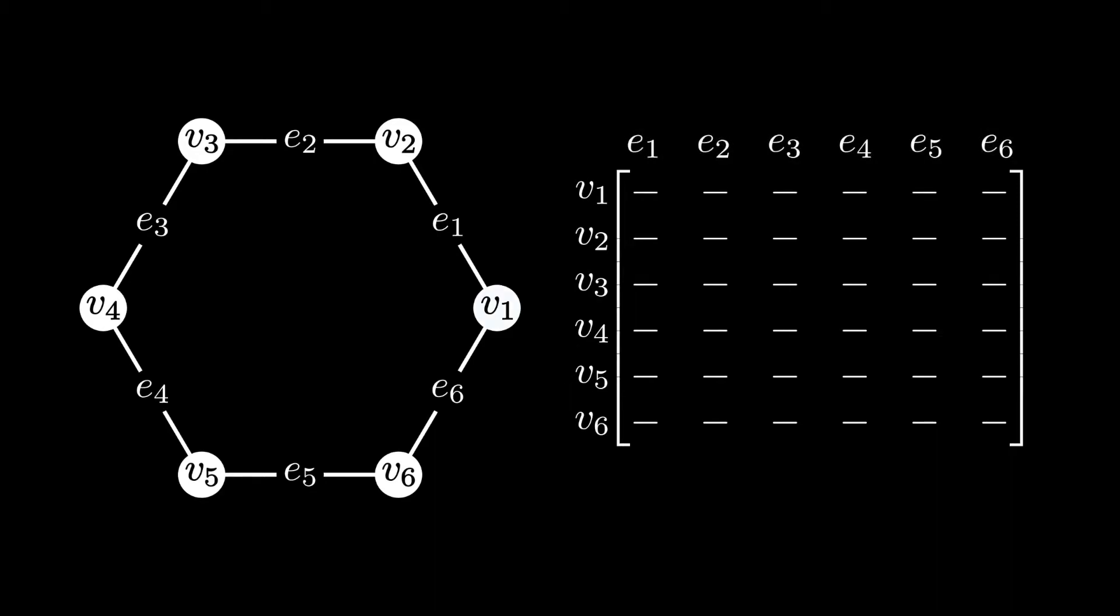And our goal is to fill this matrix with 1s and 0s. A 1 will represent that the vertex edge pair is incident, and a 0 will represent that they are not incident.